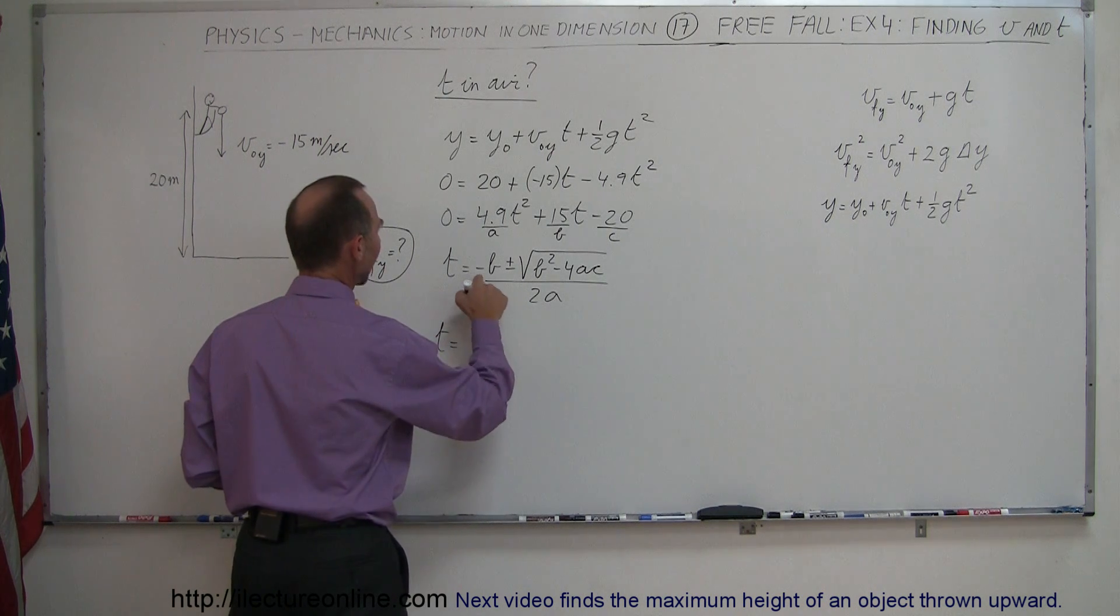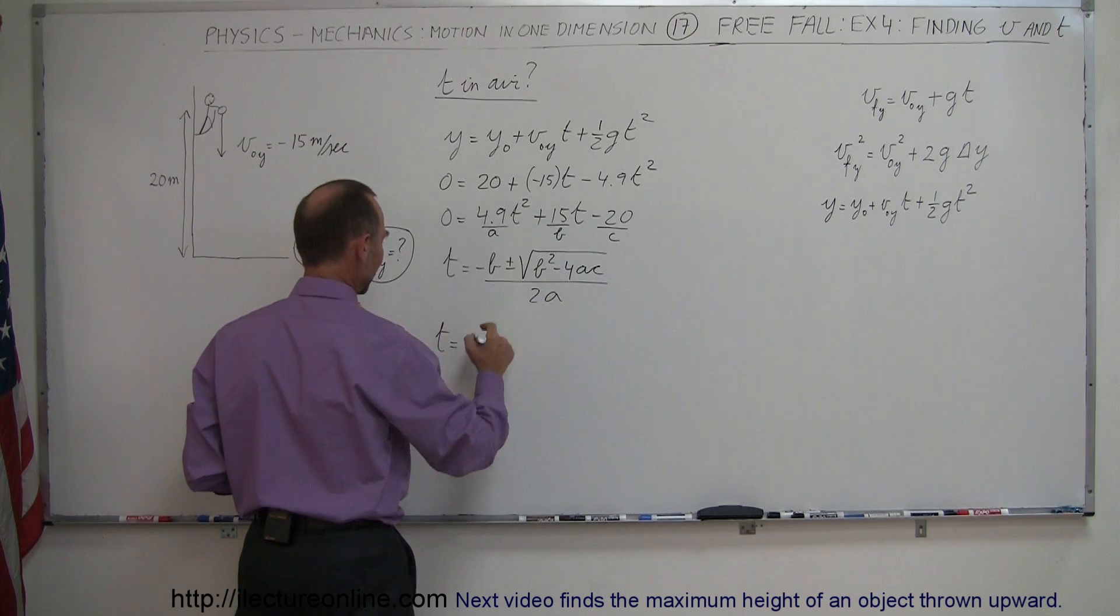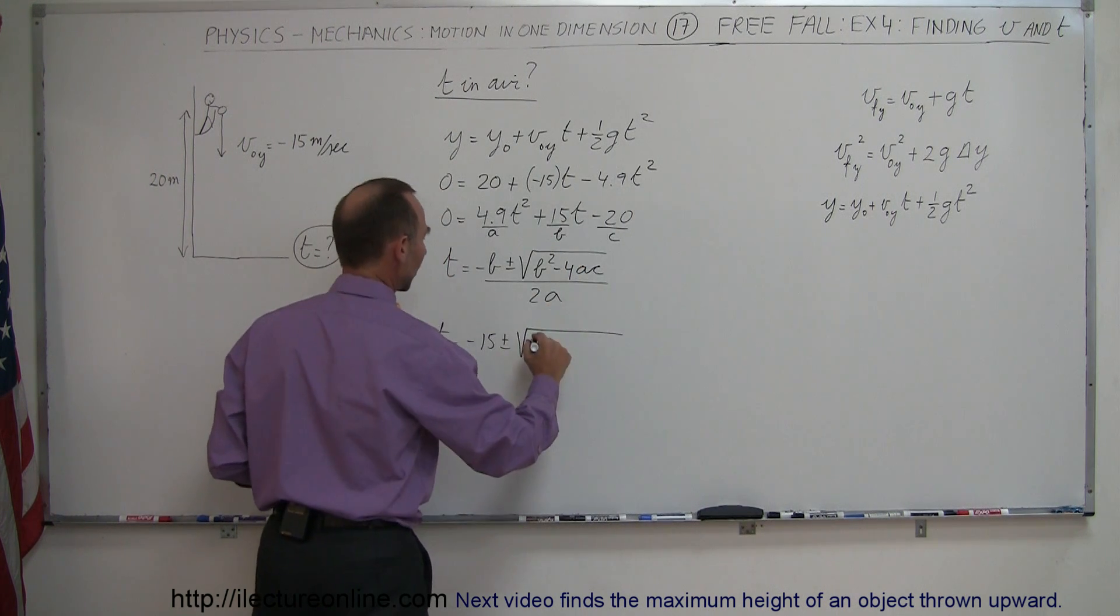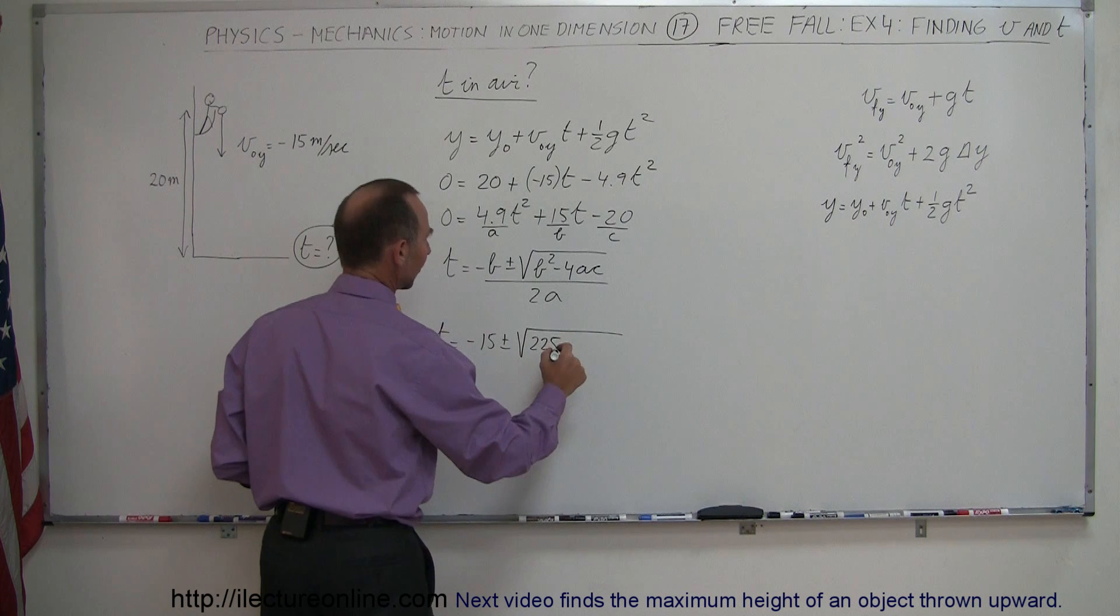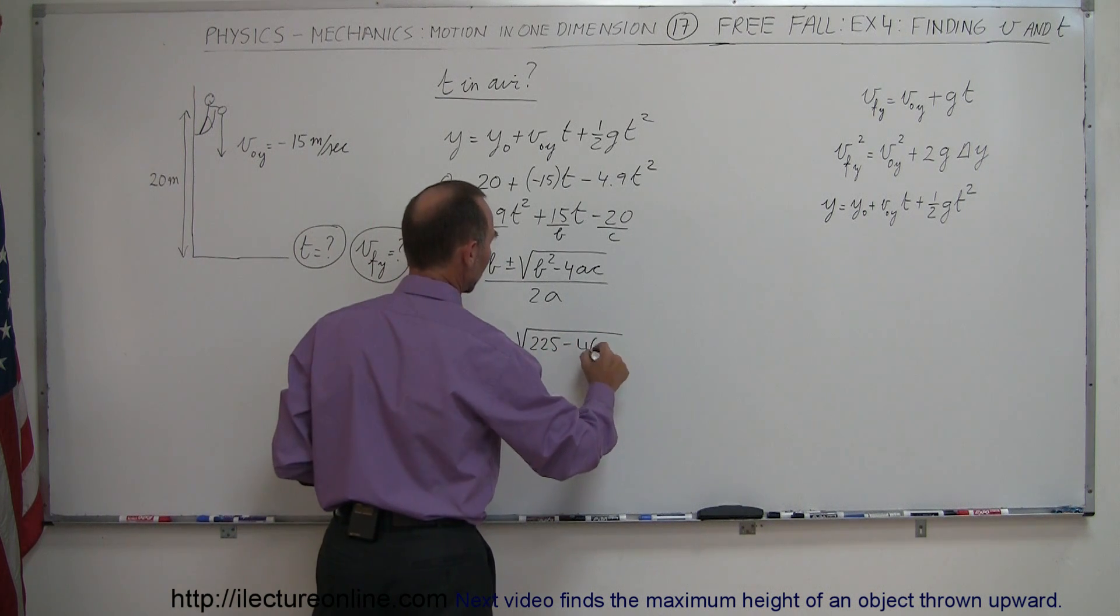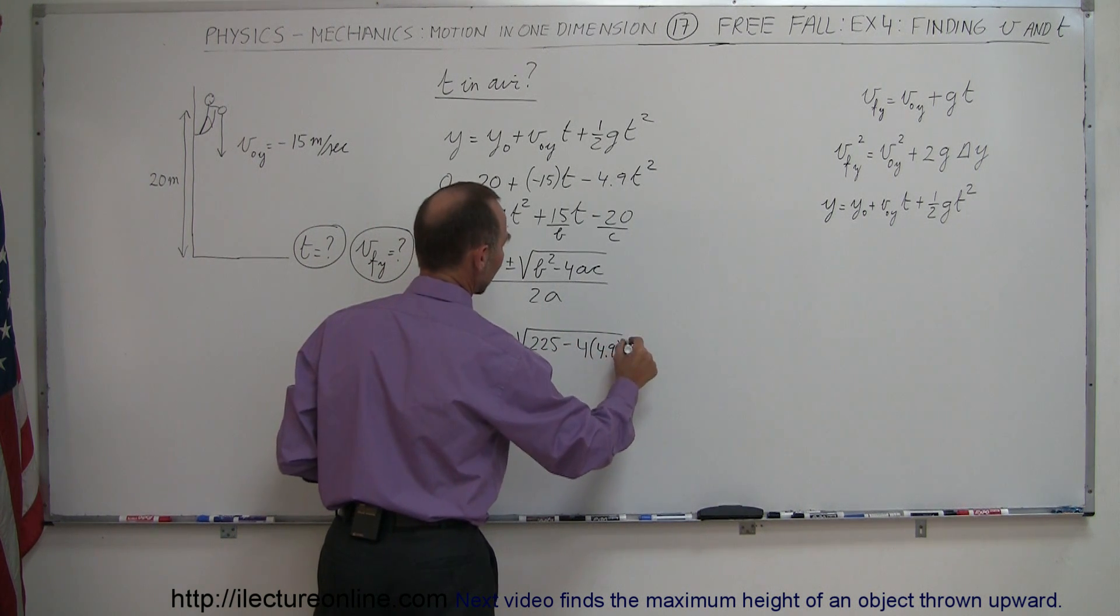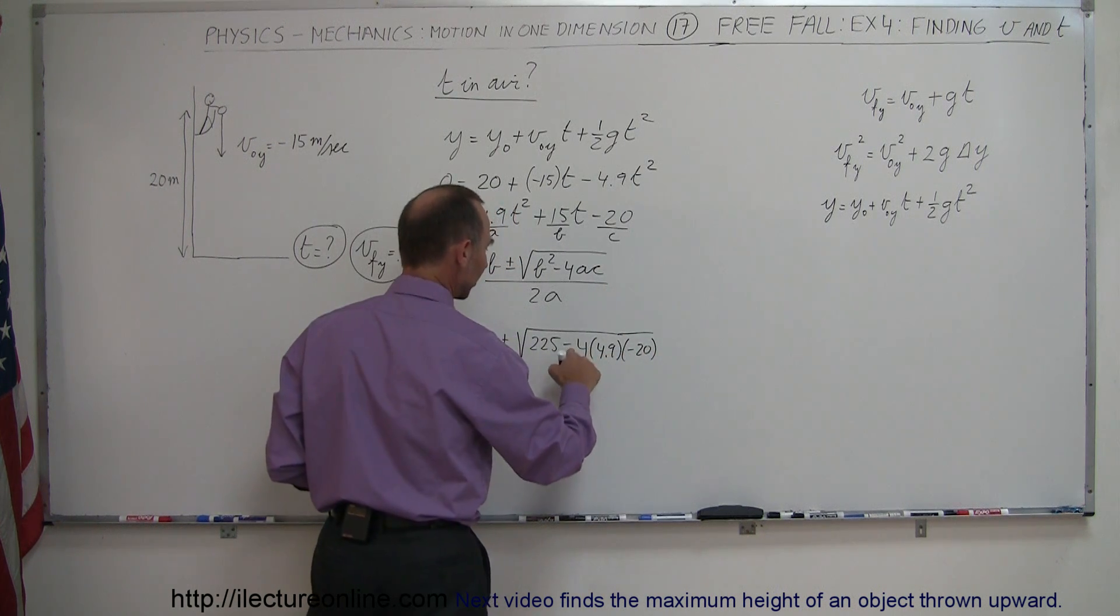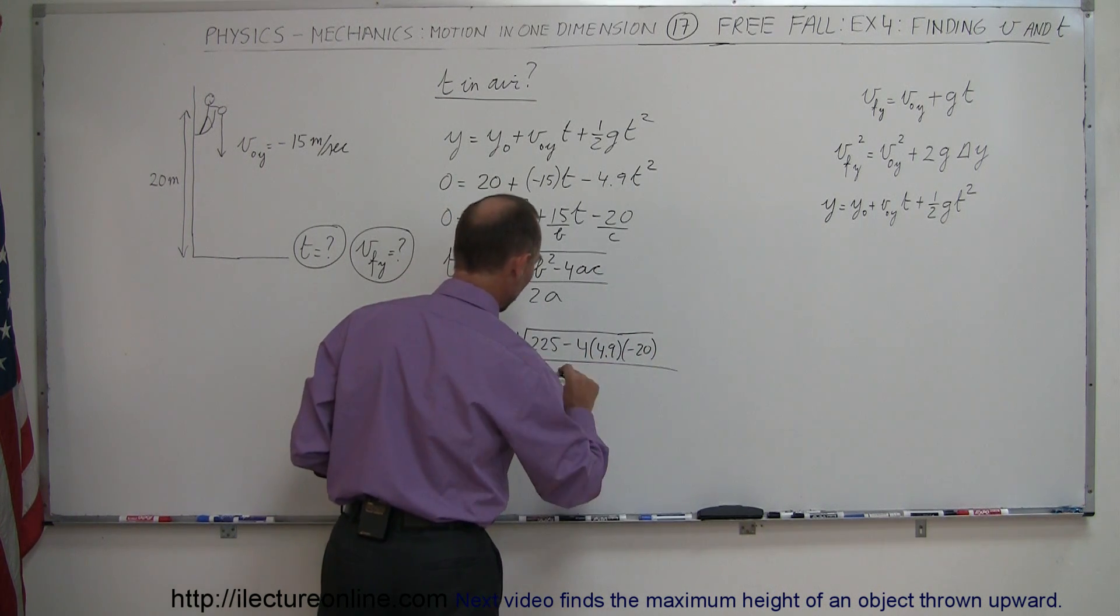t is equal to minus b, now b is a positive 15, so it becomes minus 15 plus or minus the square root of b squared, 15 squared is 225, minus 4 times a, and times c, which is a minus 20. Notice that this minus will cancel out this minus, and the whole thing divided by 2a, which is 9.8.